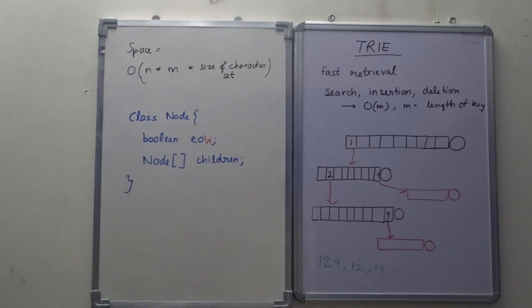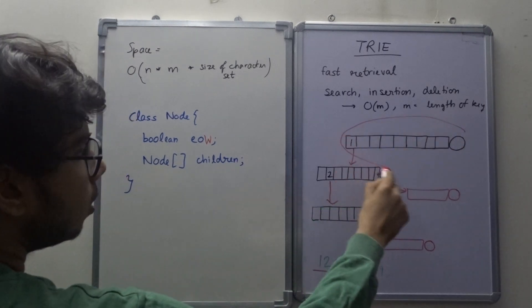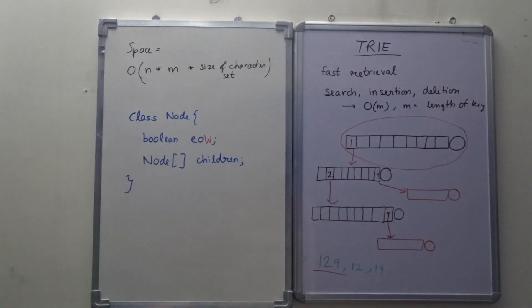So, when suppose I have to insert a key, let's say 129. So what I do is first I create a node and that is this node. And let's say all of my keys are integers. So my maximum character set is of size 10—no sorry it's of size 9.